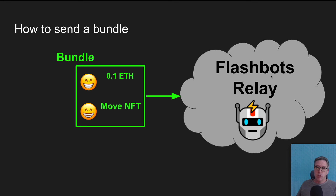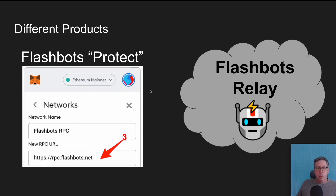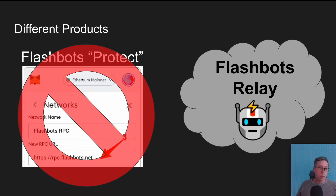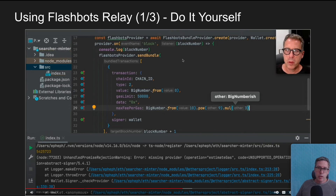When the bundle is given to the Flashbots relay, it hands it to the validators of Ethereum, and they know the rule: it is only included together or not at all. There are several Flashbots products: Flashbots Protect and the Flashbots Relay. Flashbots Protect is easy to use with MetaMask for transaction privacy prior to inclusion, but it is not suitable here because it cannot submit two transactions simultaneously with special inclusion rules. Using the Flashbots Relay directly takes technical know-how in coding and how Ethereum transactions are formatted under the hood. I have a video linked in the description if you're interested in trying it yourself, but I don't recommend it unless you have a good handle on a programming language and how Ethereum works.